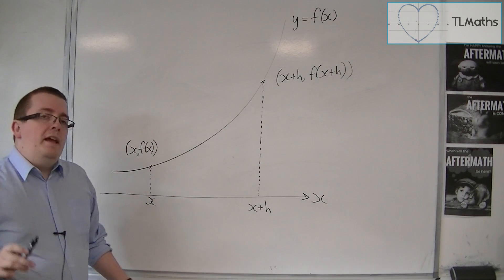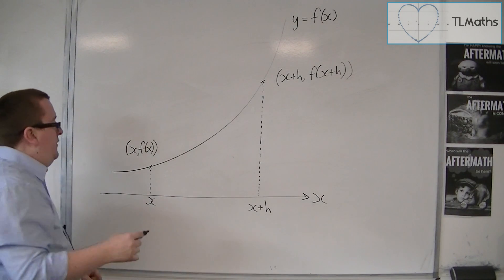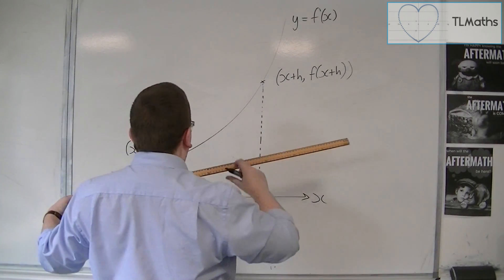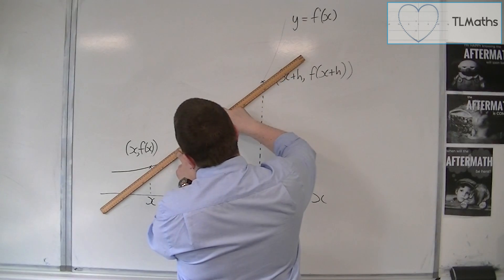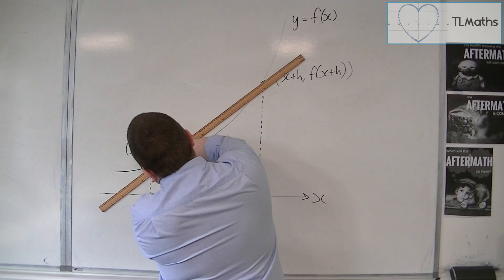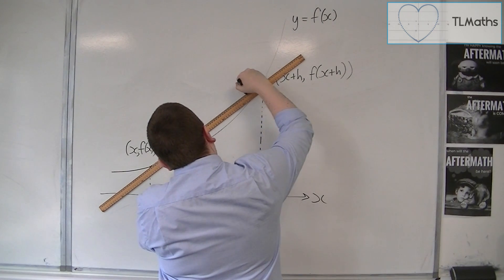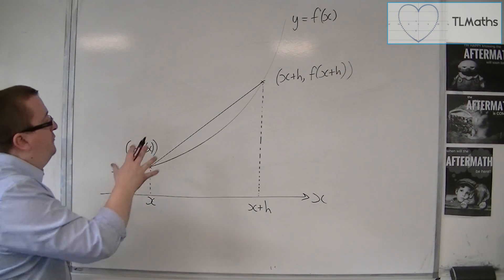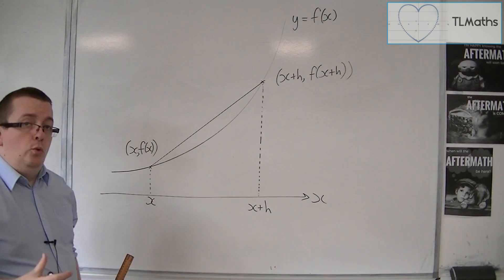So what I can then do is find the gradient of the chord between those two points. So I can draw a line going from one point to the other, like that. And I can find the gradient of that chord.